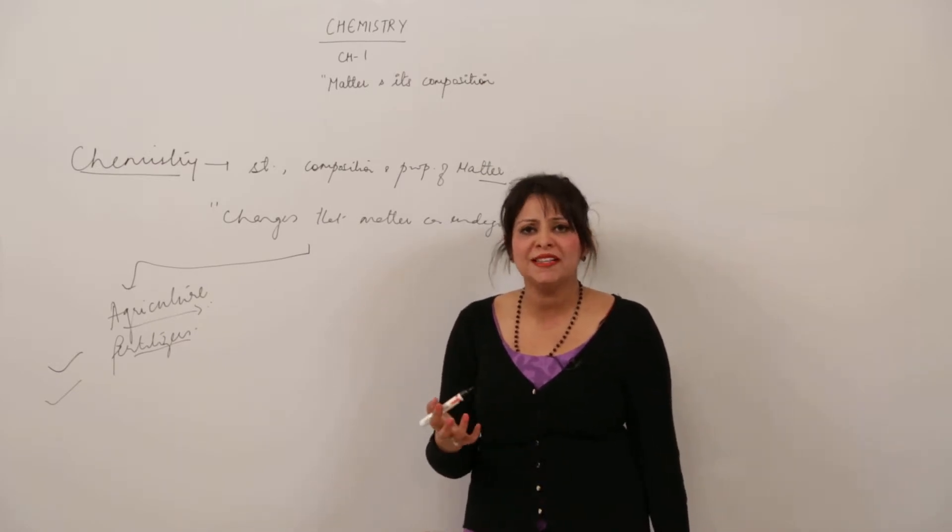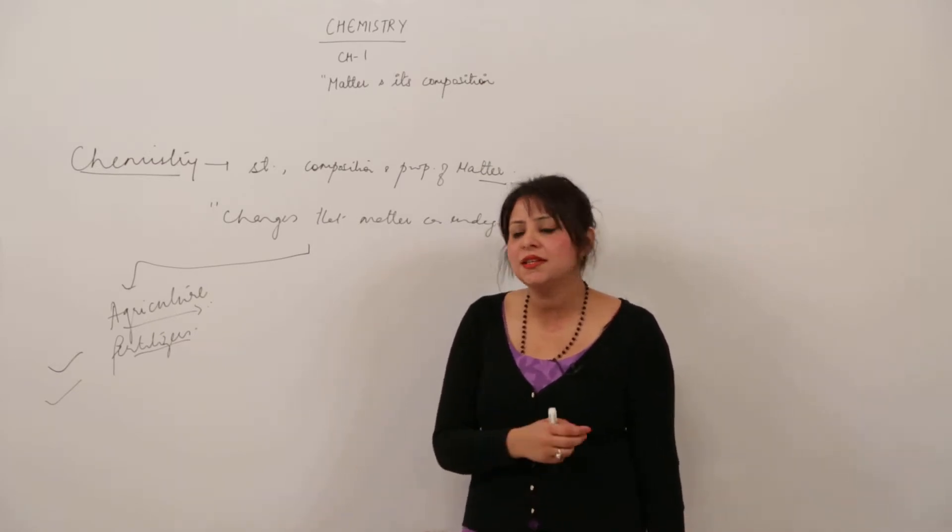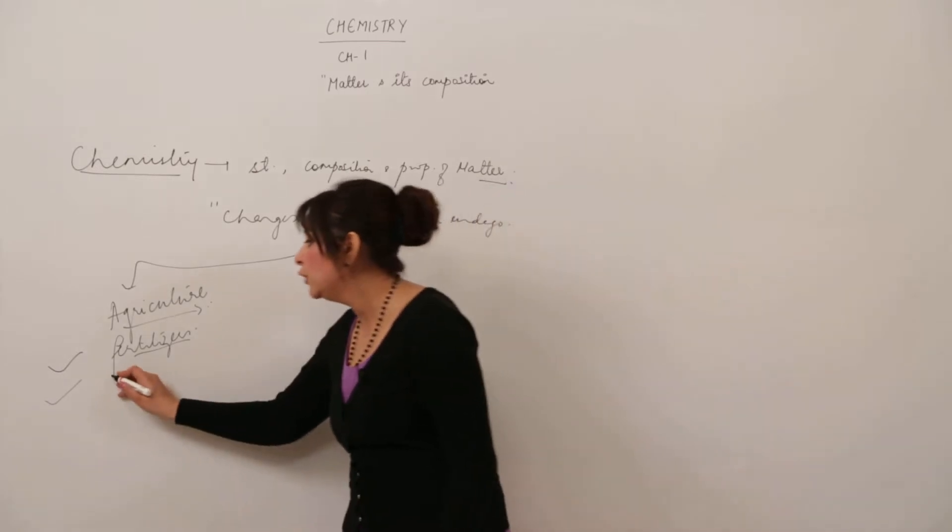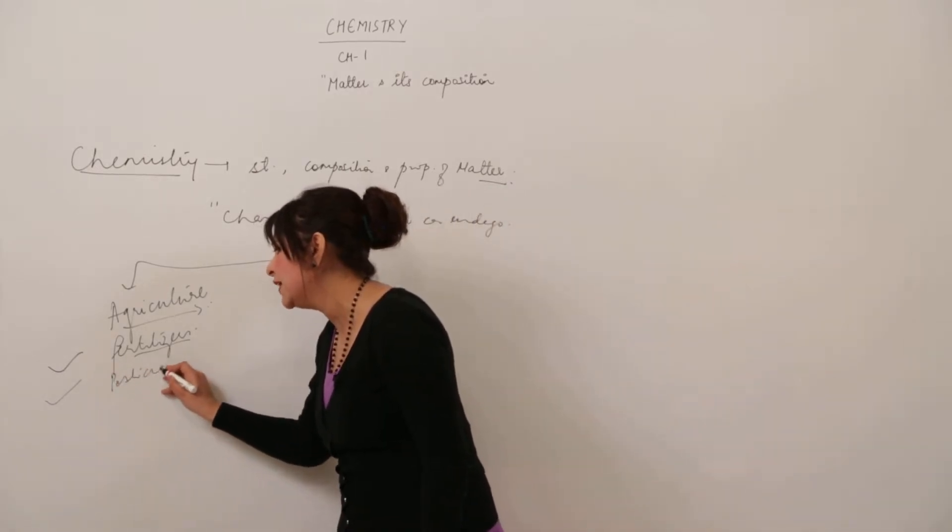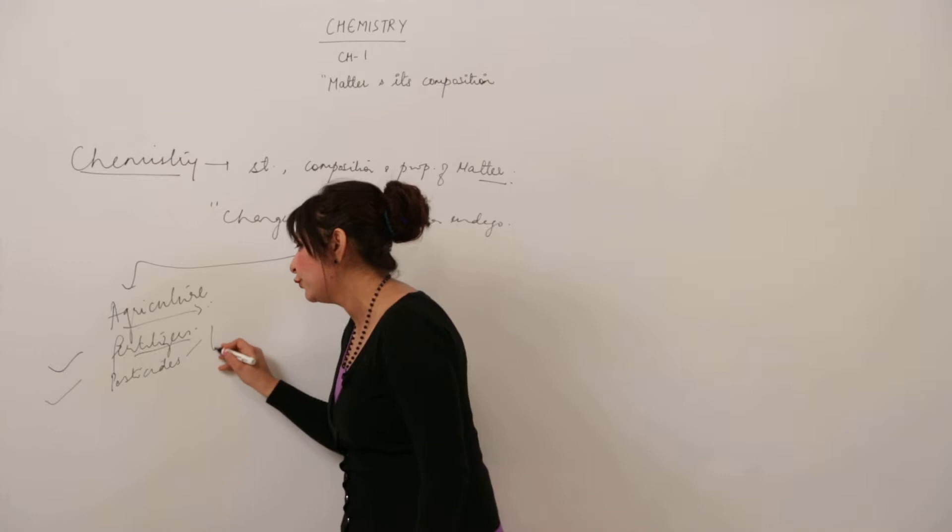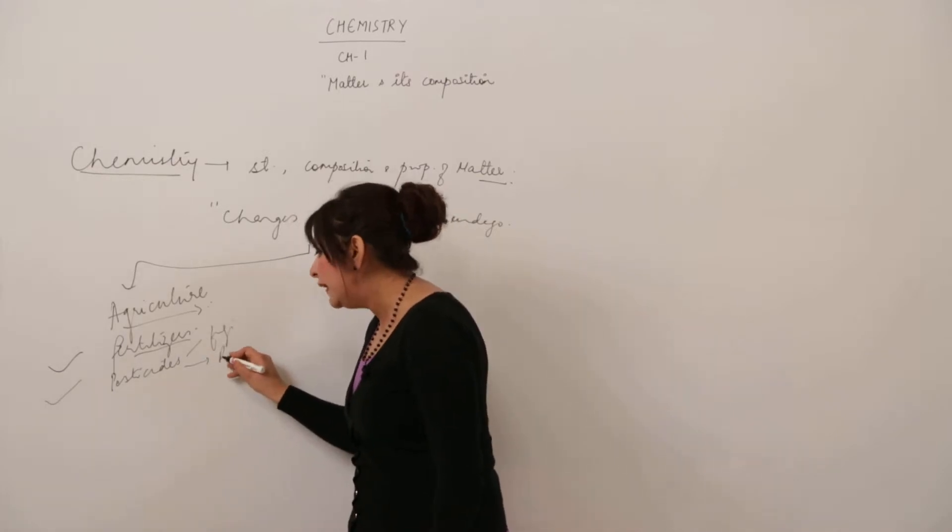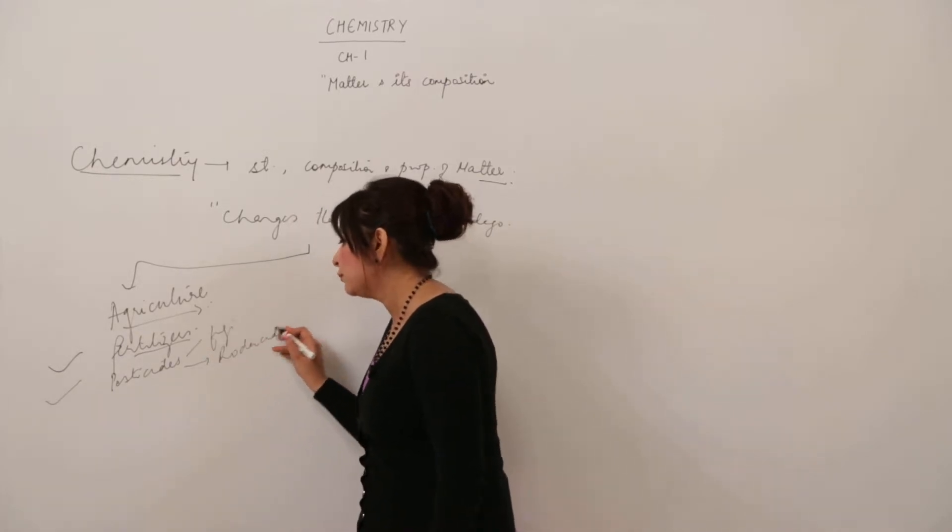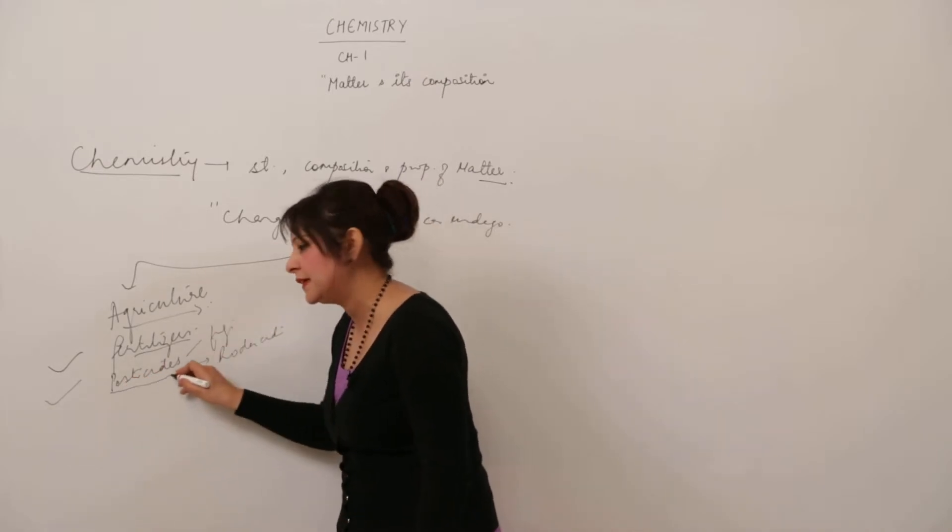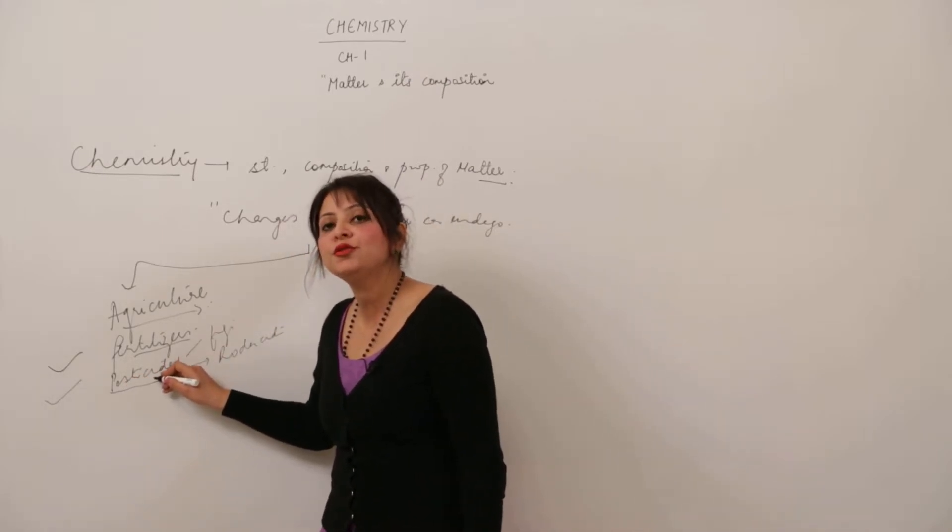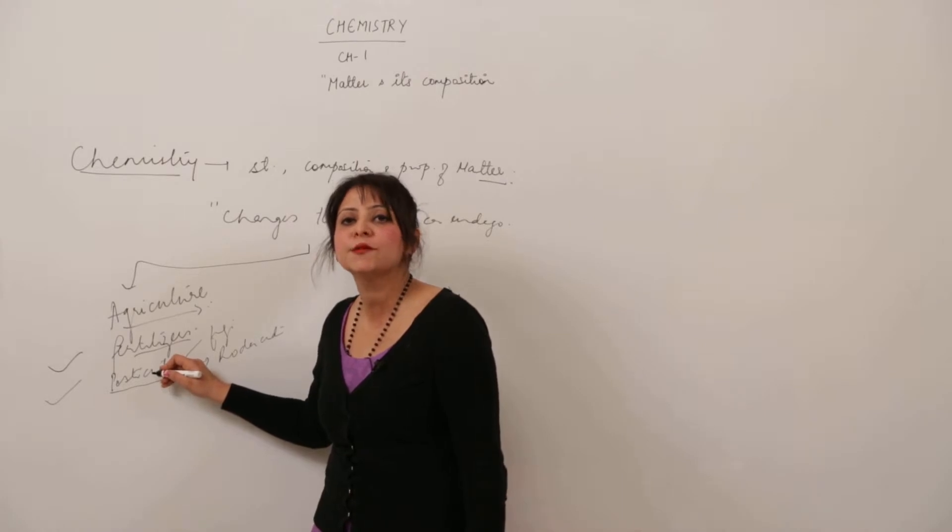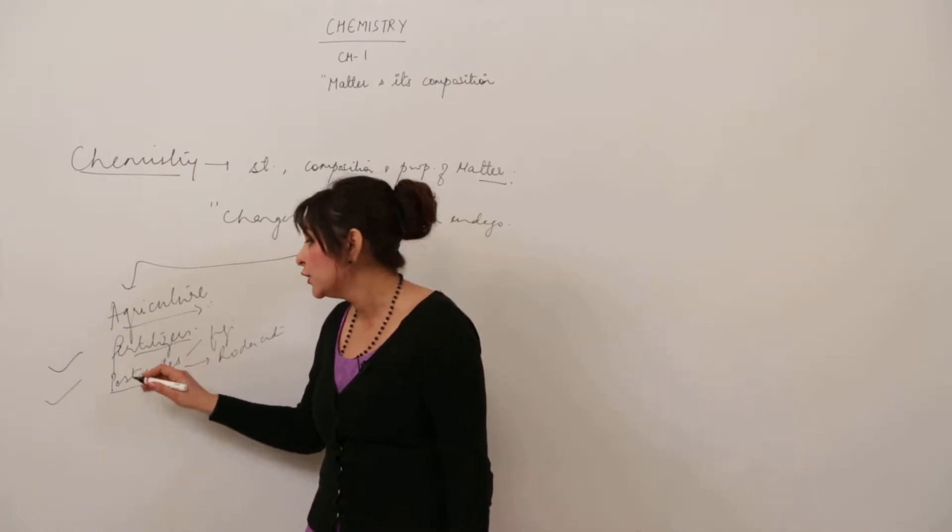And also when the plant is growing it encounters many pests, many organisms that can harm it or cause disease. So we use pesticides. Pesticides is a big branch—we have fungicides, rodenticides, many more. Basically these all come under pesticides, which are used to kill pests, the microorganisms which cause disease in the plant.